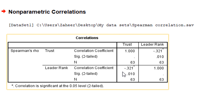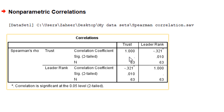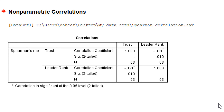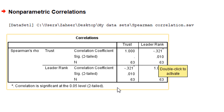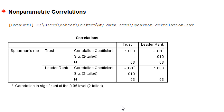Here we have the output. The correlation between trust and leadership rank is minus 0.321. This is a moderately strong negative relationship and it is also significant, as the p-value is less than 0.05 — this is 0.010. So we conclude that there is a relationship between perceived trust by the employees and perceived leadership. You can see this is negative.